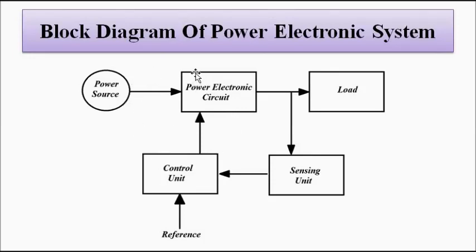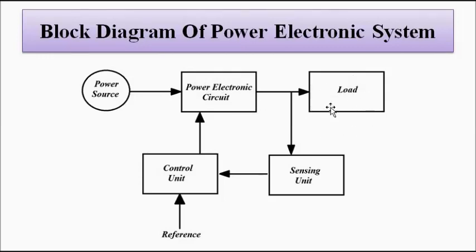In the block diagram, the power electronic circuit is the core. The source of power supplies the power, which is then modified according to the desired level by the power electronic circuit. The load requires power at a suitable level, so the power electronic circuit takes the power from the source, makes the necessary changes as per the circuit design, and then supplies it to the load.